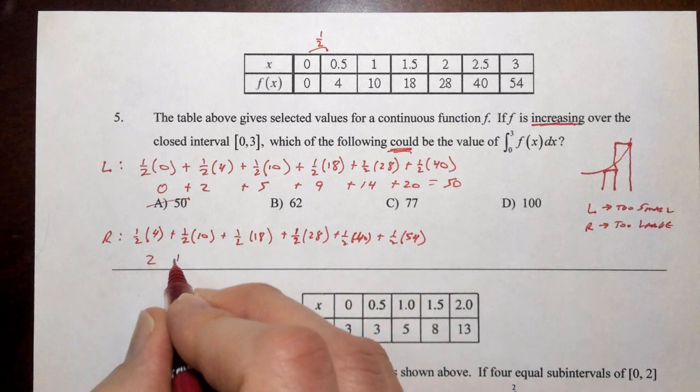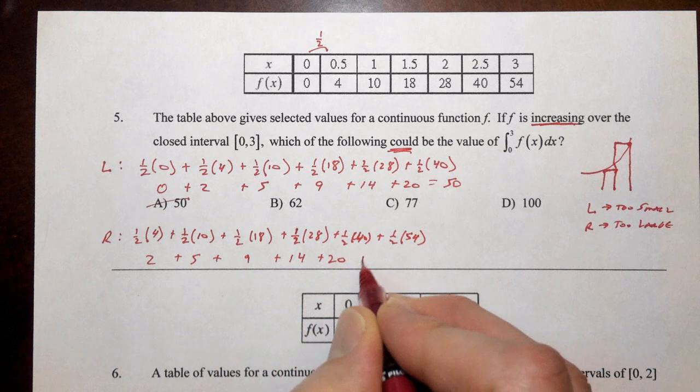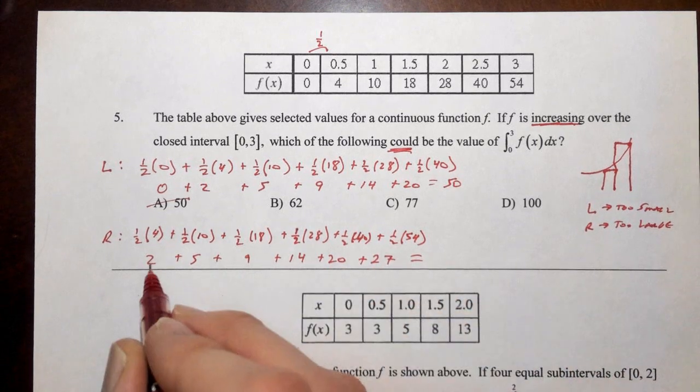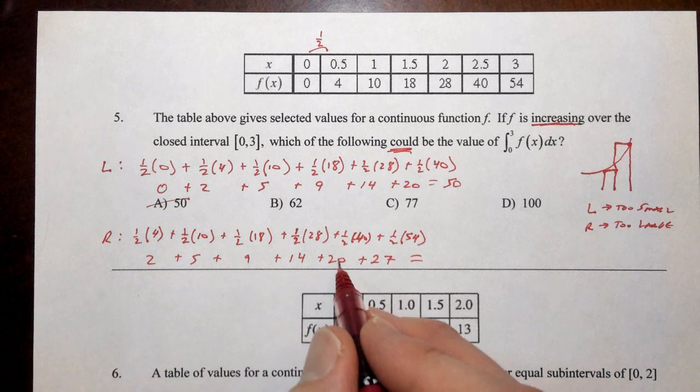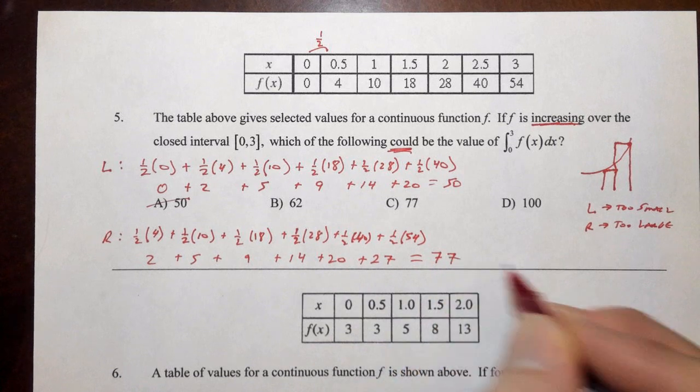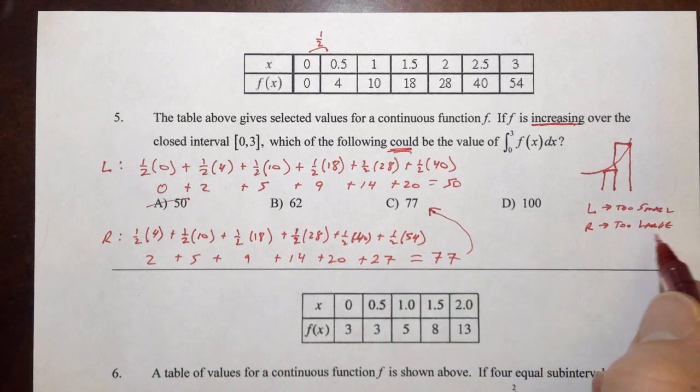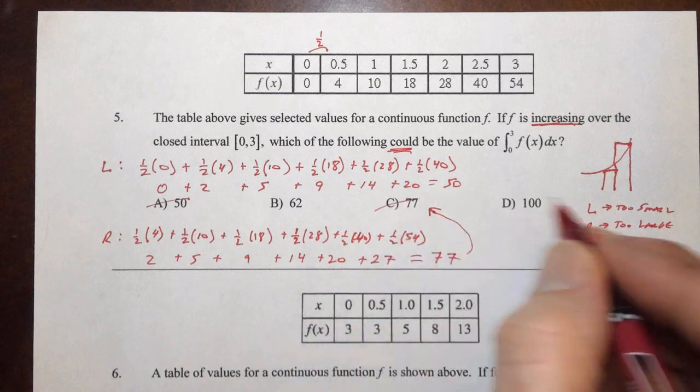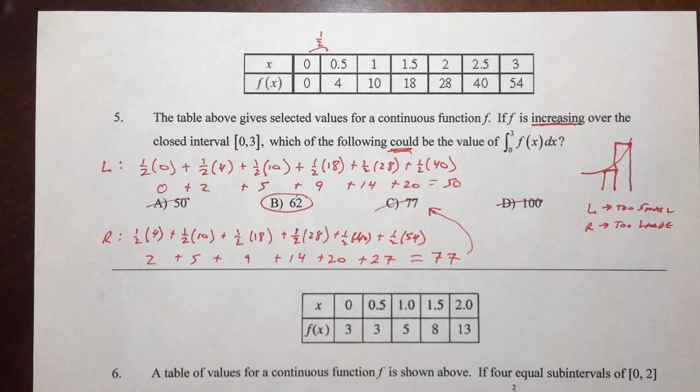So we have two plus five plus nine plus fourteen plus twenty plus twenty-seven. So seven plus nine is sixteen. Sixteen plus fourteen is thirty. Plus twenty is fifty. Plus twenty-seven is seventy-seven. Oh, look at that. There's a seventy-seven. Now that's a right sum. The right sum is too large. So that's out. Hundred's definitely out. And our answer is going to be sixty-two.